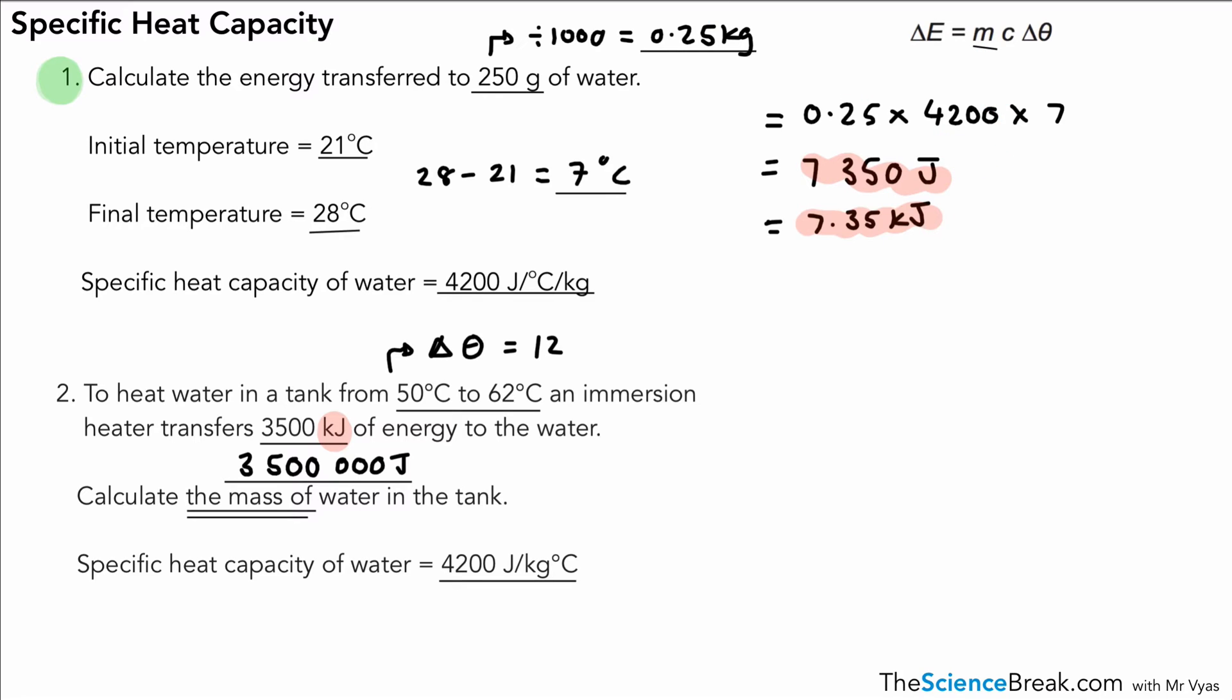Now you might be comfortable with rearranging equations and not find that too tricky, so you could actually do it that way. You could have your delta E or your energy transferred, and that would be mass equals energy divided by specific heat capacity times the change in temperature—and I'd put the bottom in brackets and multiply that out first to get the right answer. But what I tend to like to do is just put in the numbers into the equation and rearrange at the end, because you'll have fewer numbers to rearrange.